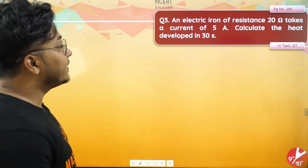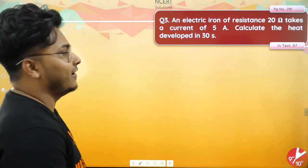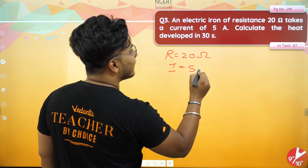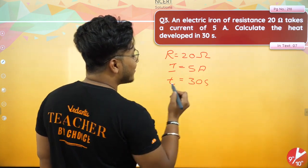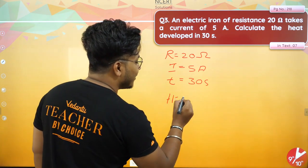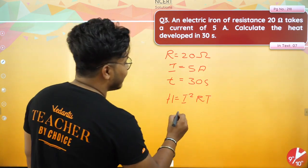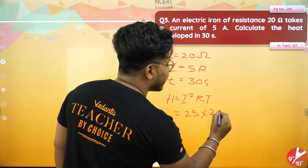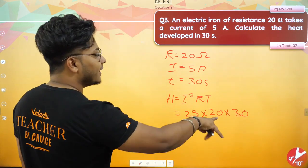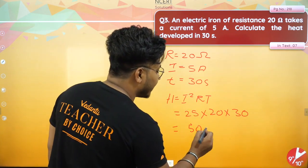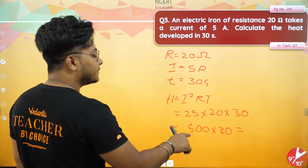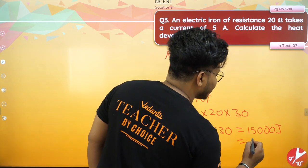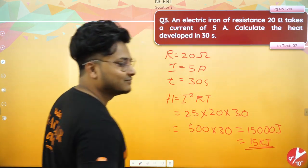Time is 30 seconds. Our general formula is H = I²RT. I have I, R, and T. So: I² = 5² = 25, R = 20, T = 30. 25 × 20 = 500, and 500 × 30 = 15,000. So 15,000 joules is the correct answer. If you want to show off, you can write 15 kilojoules as well.